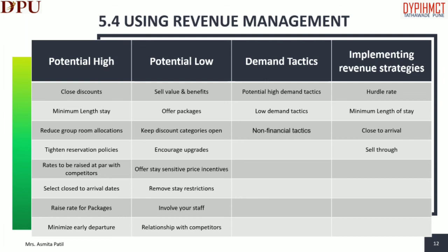Involve your staff — create an incentive contest to increase occupancy. Make sure to involve all members of your staff as well as the Central Reservation System. Having a cordial relationship with competitors can help with referrals and cross-marketing. There are three types of demand tactics used: high demand tactics, low demand tactics, and non-event tactics.